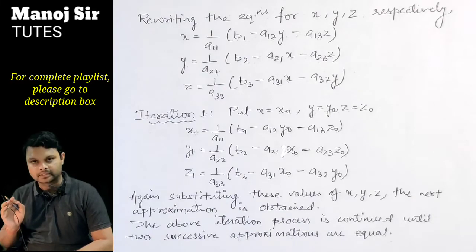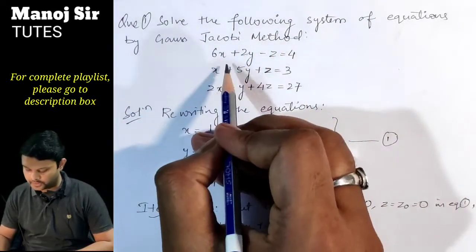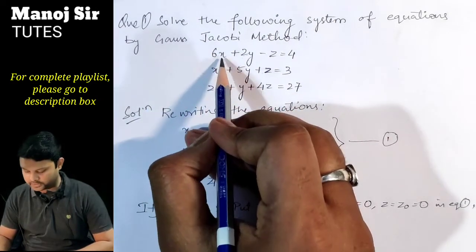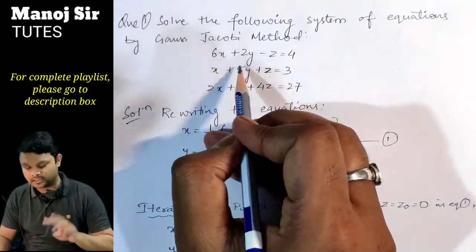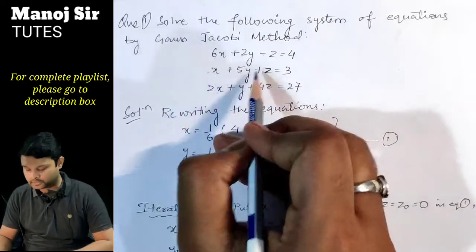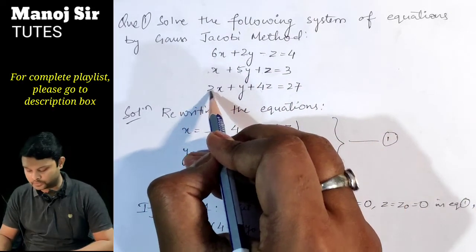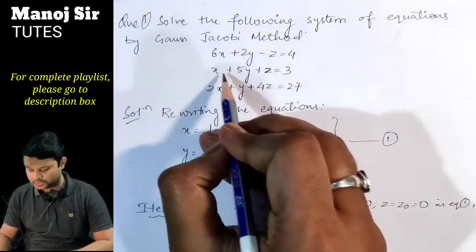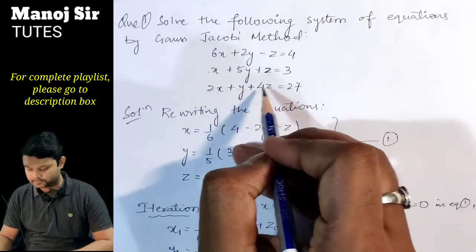The question says: solve the following system of equations by the Gauss-Jacobi method. We can verify that the diagonal dominance property is satisfied: in the first row the magnitude of the diagonal element is 6, which is greater than the sum 3 of the off-diagonal elements; in the second row the magnitude 5 is greater than 1+1=2; and in the third row the magnitude is greater than 2+1=3. So diagonal dominance is satisfied.